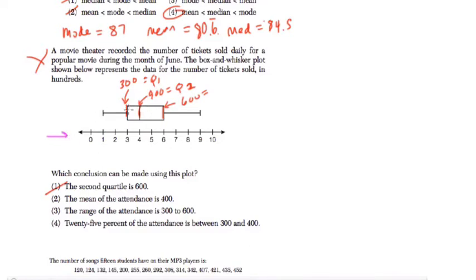And I started to mark down what each of these lines represent. This line represents the first quartile, or the lower half of the lower half of the data, or the 25% mark.